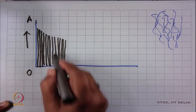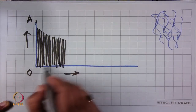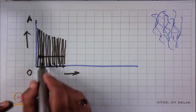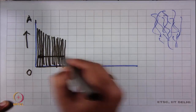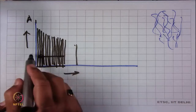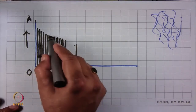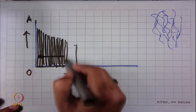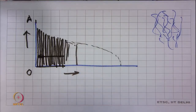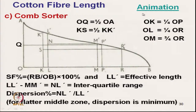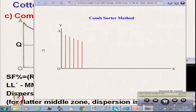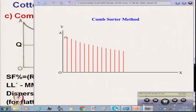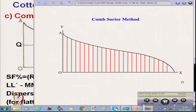The gap between fibres must be exactly even with no irregularity. Arranging fibres this way starting with the longest, in an even manner, produces a curve known as the sorter diagram. Starting with the longest fibre and aligning evenly gives the sorter diagram shape.